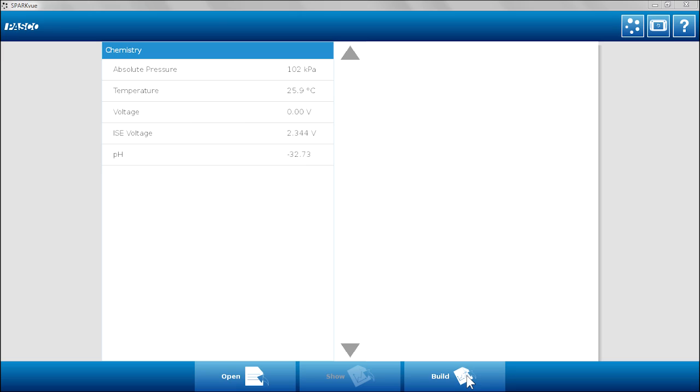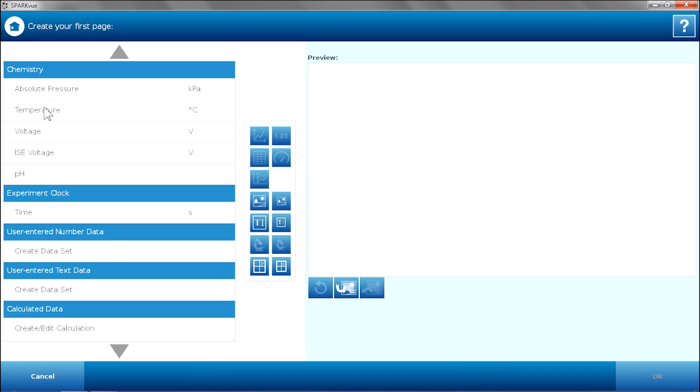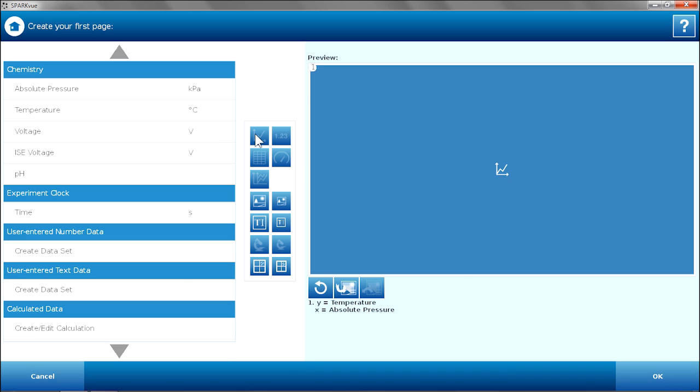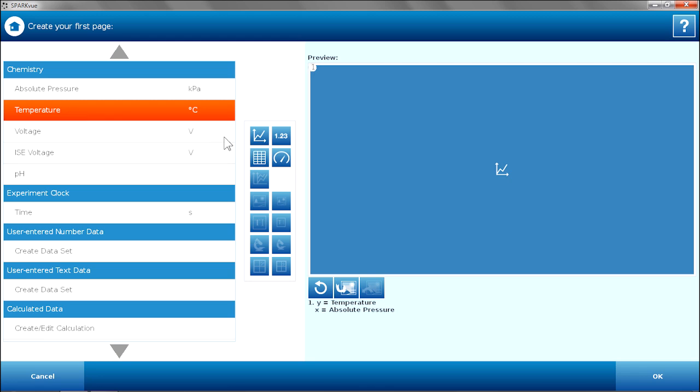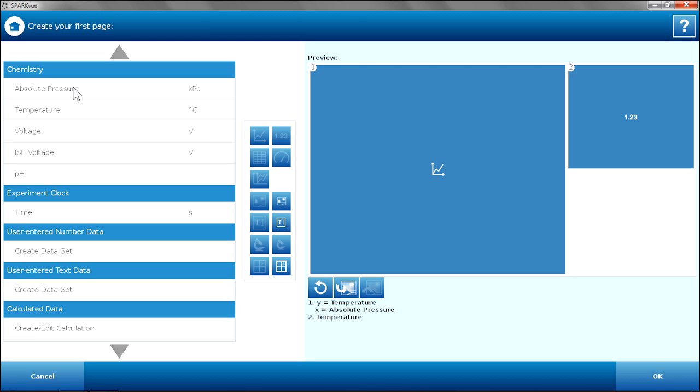I am going to go to Build. I am going to look at temperature and pressure in a graph. I also want to monitor those two values, so I am going to look at them in a digits display. Temperature in digits and pressure in digits.